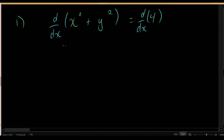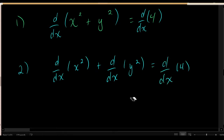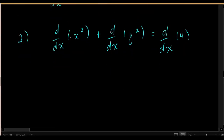Now let's simplify using the derivative rules. Using the sum rule, this becomes the derivative of x squared plus the derivative of y squared equals the derivative of 4. The derivative of x squared with respect to x, by the power rule, is 2x. And the derivative of the constant 4 is equal to 0.